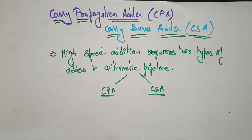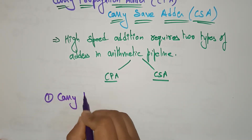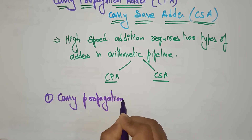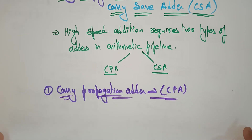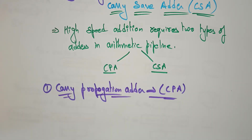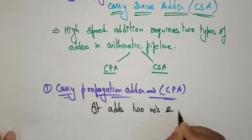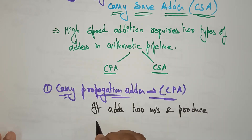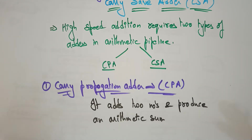Now let me explain how these circuits are represented and how the operation is going to be performed. First, let's consider the carry propagation adder, which we usually call CPA. What is the use of this adder? It adds two numbers and produces an arithmetic sum. The carry propagation adder simply adds two binary numbers and produces an arithmetic sum. Let's have a look at the circuit.